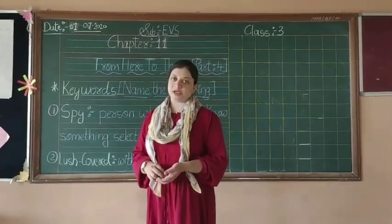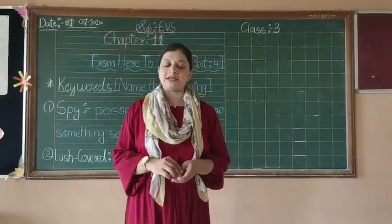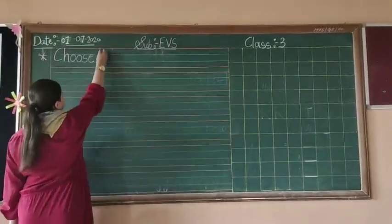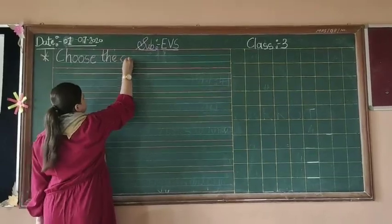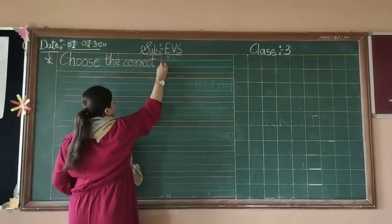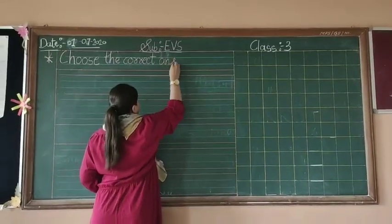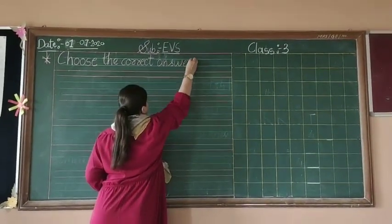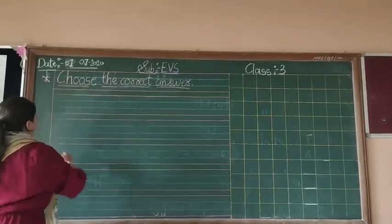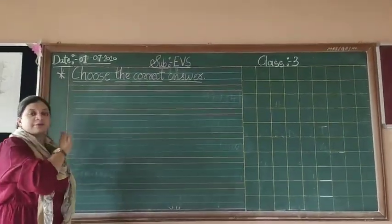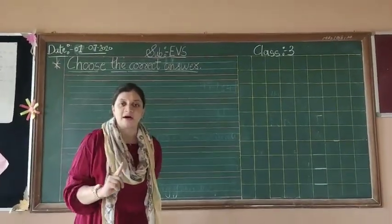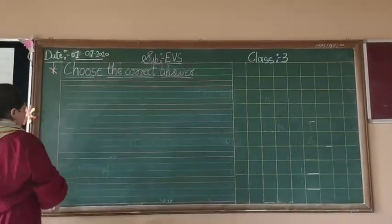Now our portion number two is 'Choose the Correct Answer.' Choose — C-O-R-R-E-C-T — correct. Answer — A-N-S-W-E-R. Choose the correct answer. You have to give this heading in the next page of your notebook.